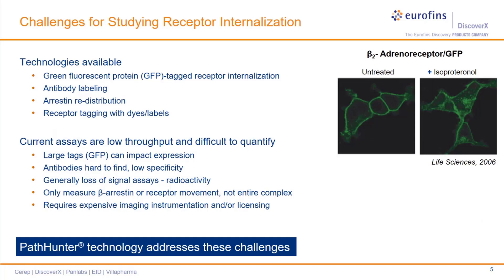Current techniques for visualizing receptors use fluorescent tags, probes, or antibodies to analyze internalization. Such methods for documenting receptor internalization in response to ligand receptor engagement are often cumbersome, qualitative, and not well-suited to high-throughput testing. In addition, receptor fusions with large fluorescent tags may affect expression and internalization, while techniques using antibodies require reagents with good specificity.